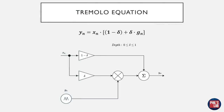We can summarize this block diagram in a very simple equation. Our output at sample N is our input X(n) multiplied by this function. We have the (1 - delta) term as a constant multiplied by X(n), and we sum that with X(n) times delta, our depth, times our modulating LFO signal G(n). One term is the pure audio signal and one is the multiplication of the audio signal and the LFO signal. This is really useful and very simple, and this is all we essentially have to implement in software.